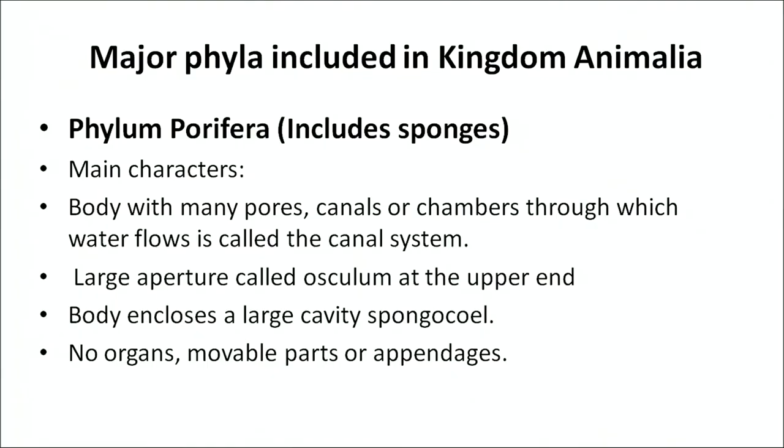The kingdom is further divided into two sub-kingdoms. The first sub-kingdom is Parazoa — in it there is no symmetry and no tissues. The first phylum we will study in sub-kingdom Parazoa is phylum Porifera. It has a cellular grade of organization and only two embryonic germ layers — it is diploblastic. It is acoelomate with no body cavity. Notochord may or may not be present. It is asymmetrical.